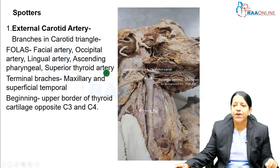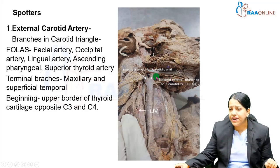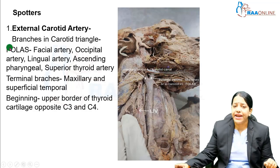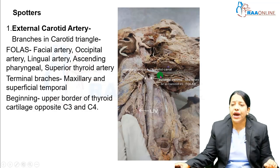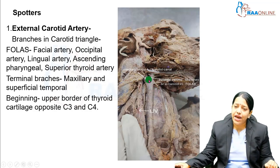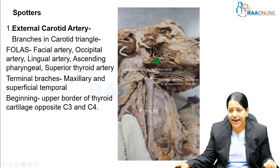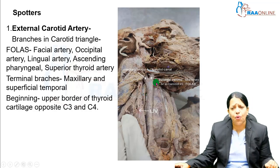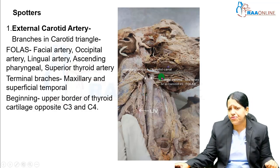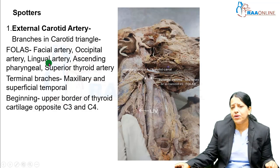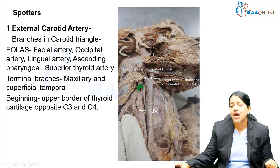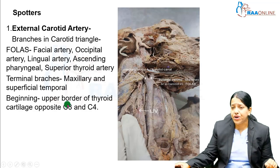Once the external carotid artery is identified as a spotter, the tag question can also be about the branches in the carotid triangle. The external carotid artery gives branches in the neck, enters the parotid gland, and gives terminal branches within the parotid gland in the face. The most common question is to name the branches of the external carotid artery within the carotid triangle.